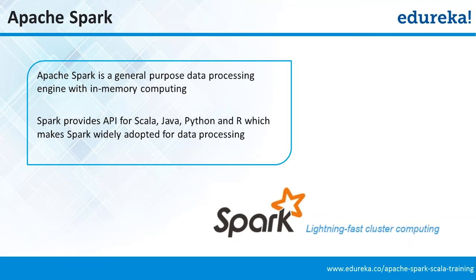Apache Spark is a general-purpose data processing engine with in-memory computing. Spark provides APIs for Scala, Java, Python, and R, which makes Spark widely adopted for data processing requirements. Let's try to understand each one of these definitions in detail. Apache Spark is called a general-purpose data processing engine.